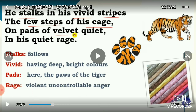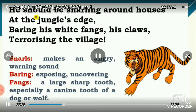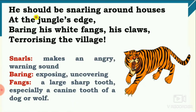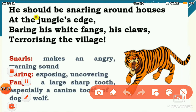The first stanza displays the life of the tiger in the zoo. Moving on to the second stanza, Norris tells us how a tiger should be — in contrast to the caged tiger. He says the tiger should be 'snarling around houses at the jungle's edge, bearing his white fangs, his claws, terrorizing the village.' We will see the word meanings.